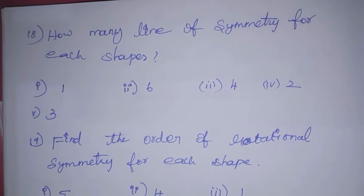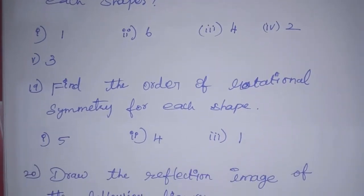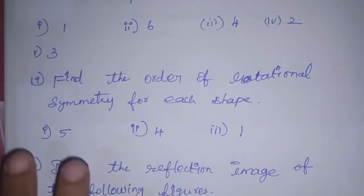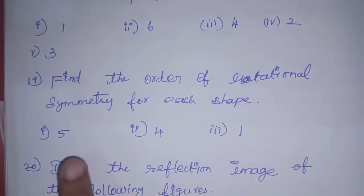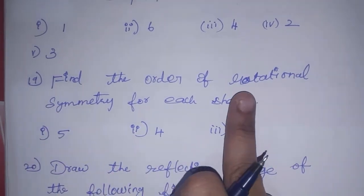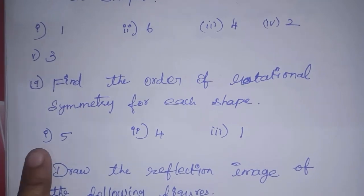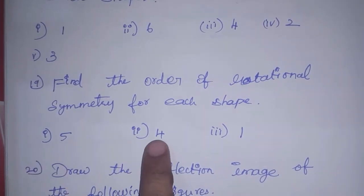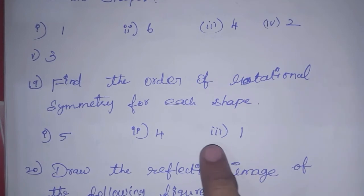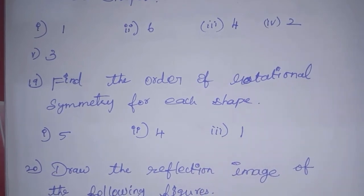Next one is the 19th sum: find the order of rotational symmetry for each shape. Rotate the shapes — first subdivision is 5, second subdivision is 4, third diagram is 1. You can rotate and check this answer.